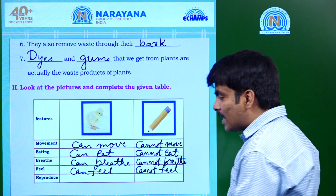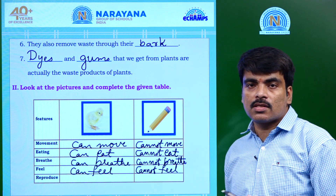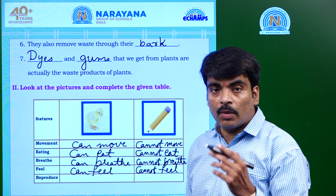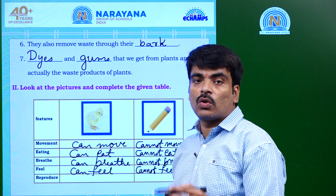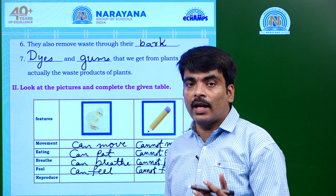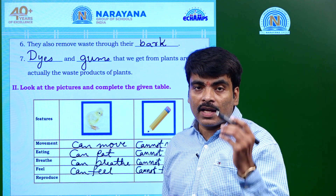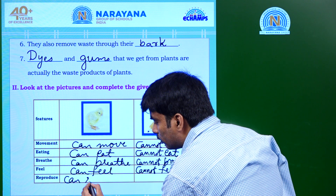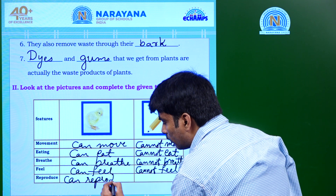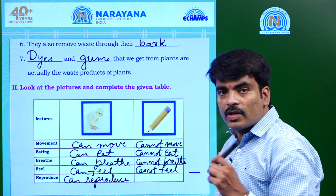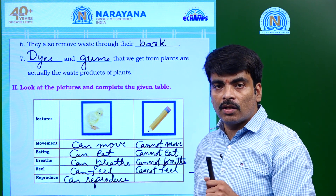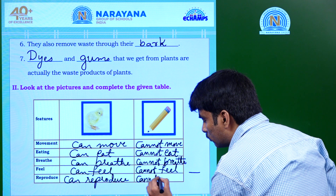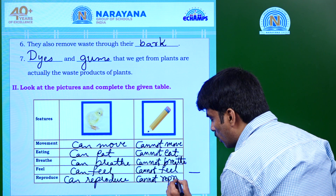Lastly, reproduce. As we know, living organisms reproduce. The chick, as it grows up and becomes a hen, lays eggs — the process of laying eggs by the hen is called reproduction. So it can reproduce. Did you ever see a pencil giving birth to another pencil? No. It cannot reproduce.